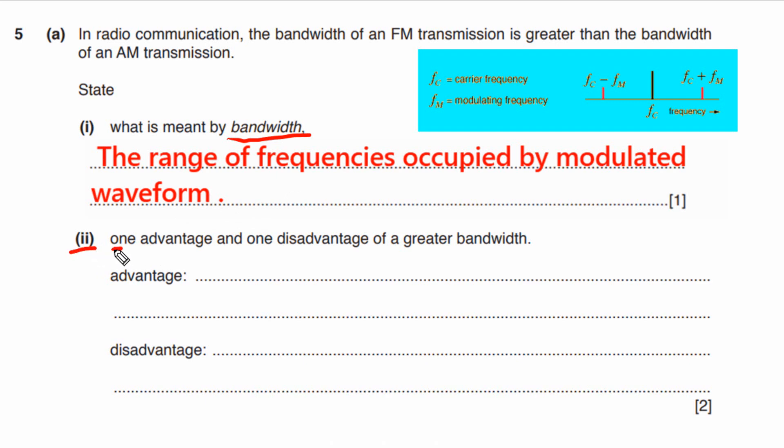Now let's look at one advantage and one disadvantage of greater bandwidth. Bandwidth affects the quality of signal — if the bandwidth is greater, quality of signal will be better; if bandwidth is lower, quality will be lower. The rate of transfer of data also depends on bandwidth: greater bandwidth means greater data transfer rate. For example, music from an FM station has much better quality than from an AM station because the bandwidth of FM is greater than that of AM radio stations.